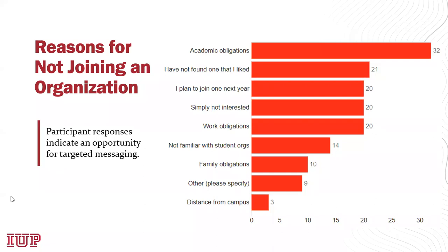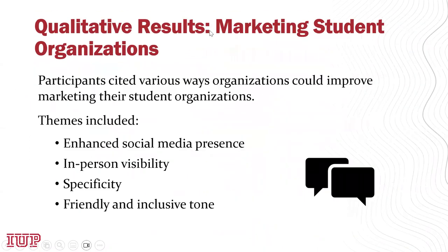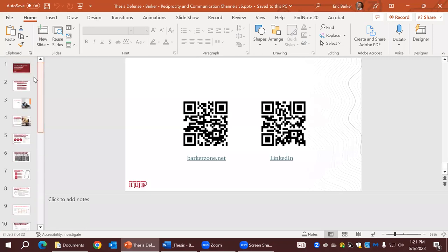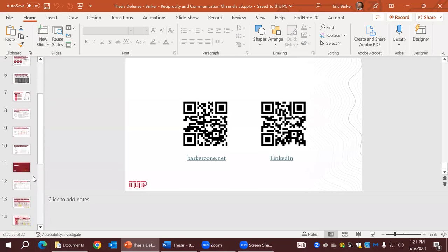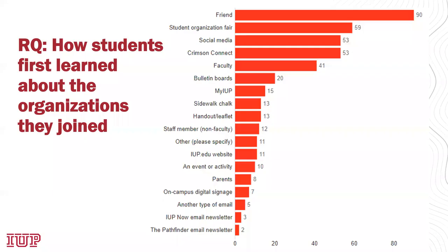Are you back? Yes, I'm sorry — I'll use my data for it. Wi-Fi is not as reliable. Back to the presentation. What we found was there's a cluster towards the top of ways that students first learned about their student organizations. Number one is friends, which illustrates peer-to-peer communications. Then student organization fairs, social media, Crimson Connect — a tool at IUP used to manage student organizations online — and faculty. Those trail off after that.